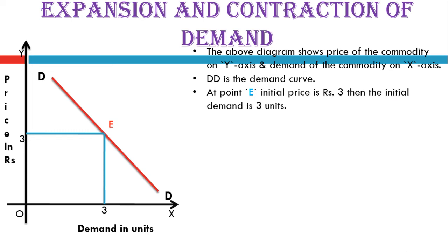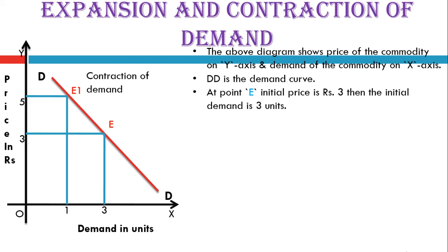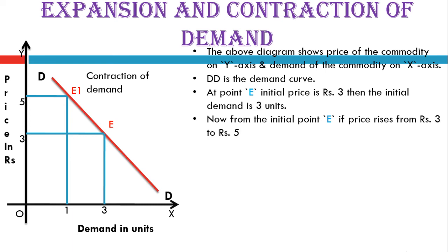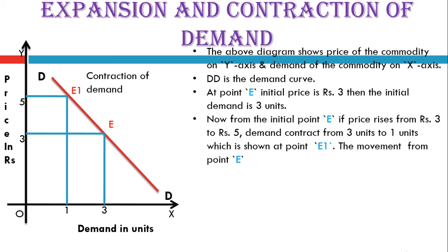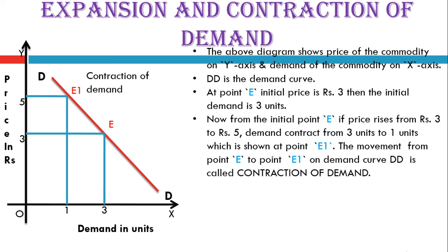When the price increases from 3 to 5, demand decreases from 3 to 1, giving a new equilibrium point E1. From the initial point E, if the price rises from rupees 3 to 5, demand contracts from 3 units to 1 unit, shown at point E1. The movement from point E to point E1 on demand curve DD is called contraction of demand, because the quantity demanded has reduced due to the price increase.